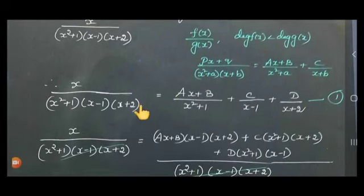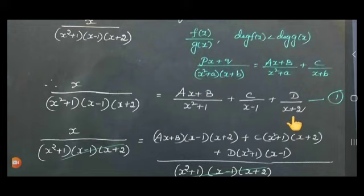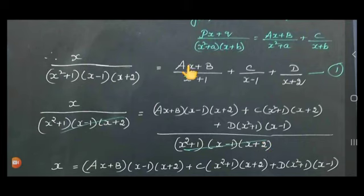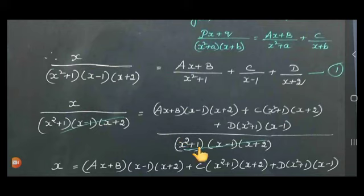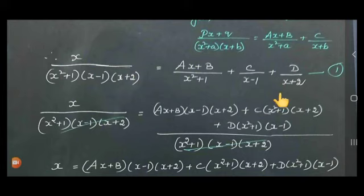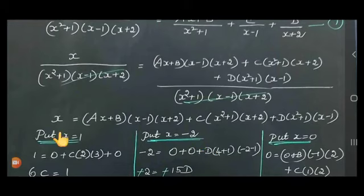As usual, we take LCM from the right-hand side. So: x / [(x²+1)(x-1)(x+2)] = (Ax+B)/[(x²+1)] + C/(x-1) + D/(x+2). Taking LCM — there are 3 factors in the denominator. So: x = (Ax+B)(x-1)(x+2) + C(x²+1)(x+2) + D(x²+1)(x-1). Name this equation 1.